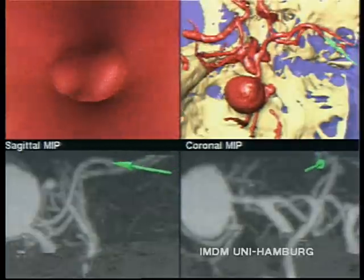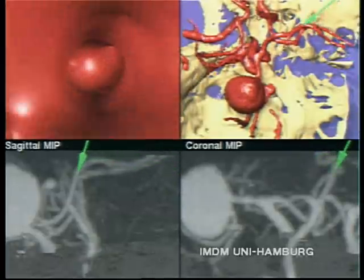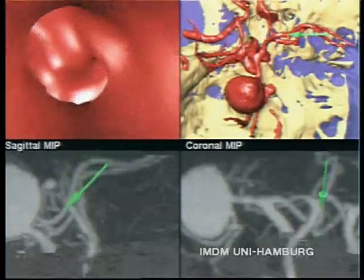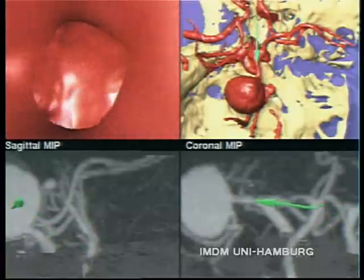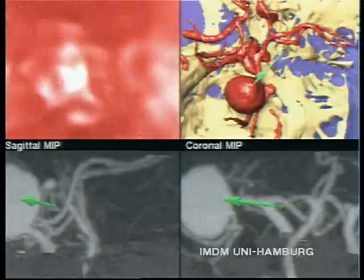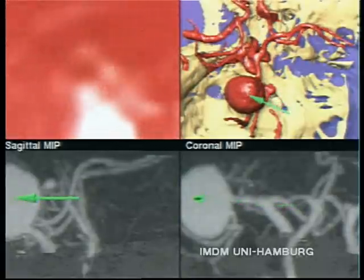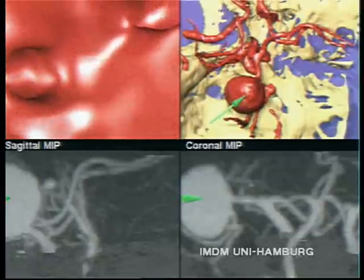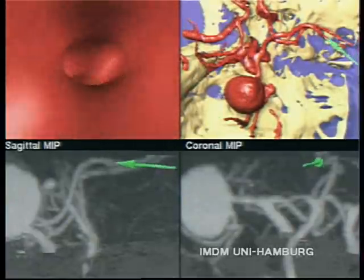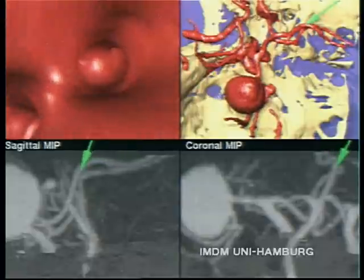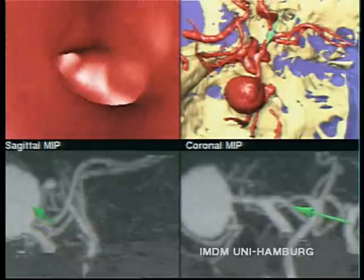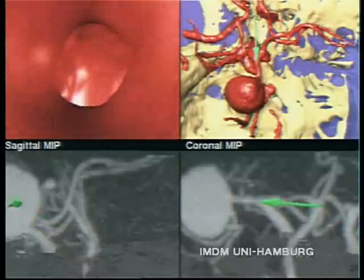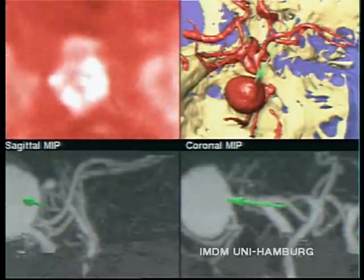We repeat the scene. We enter the anterior cerebral artery, proceed into the middle cerebral artery, follow the path to the aneurysm, turn around and look back to the orifice we came from. The scene once more — arrival at the aneurysm.